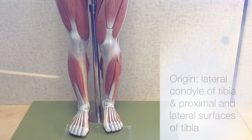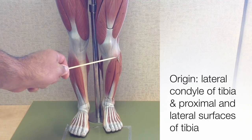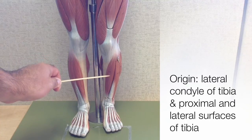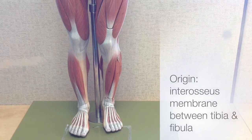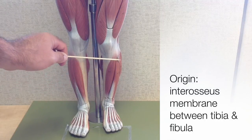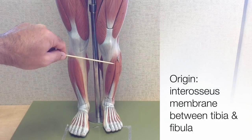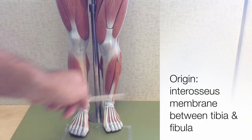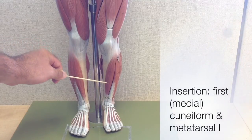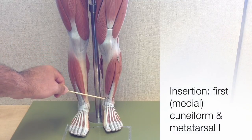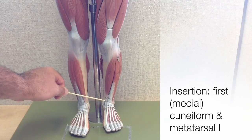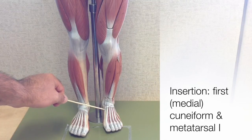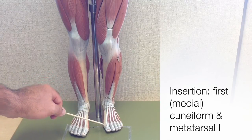Its origins are on the tibia — the lateral condyle — as well as the proximal and lateral surfaces of the tibia. Another origin, which we don't see clearly here on the model, is the interosseous membrane, the ligament located between the medial tibia and the lateral fibula. Its tendon inserts on the first or medial cuneiform of the tarsal bones, as well as the first metatarsal of the foot, located just below the great toe.